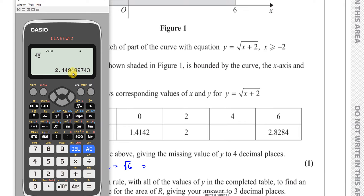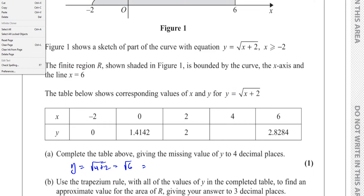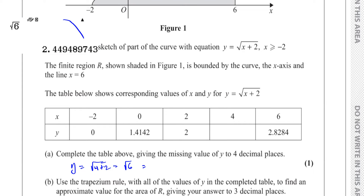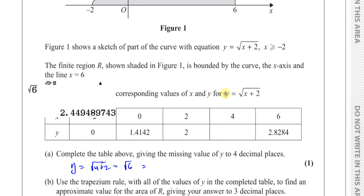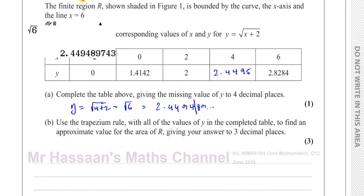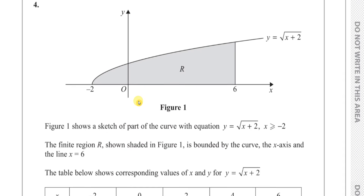So 2.4495 is the answer they want to four decimal places. That's part A of this question complete.